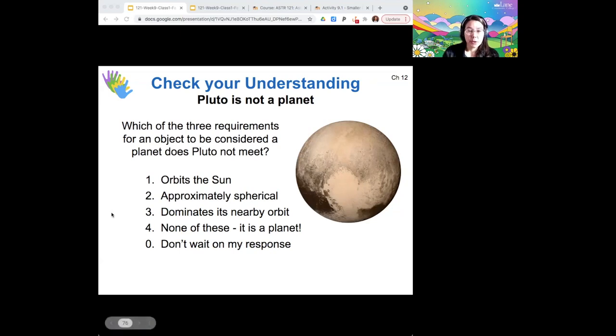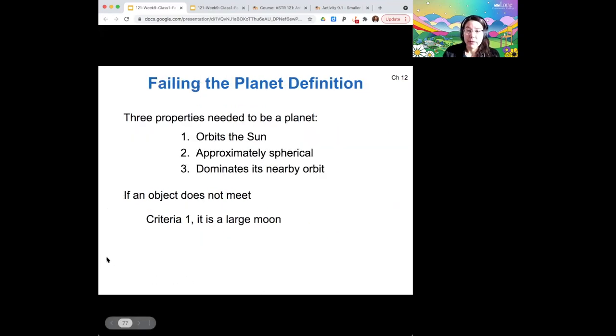All right, yeah, so Pluto doesn't dominate its nearby orbit for the reason that Charon, its moon, is another very large object that is in its nearby orbit. So Pluto doesn't count as a planet for this reason. This definition is a little bit loose, but it is what the astronomy community now uses to classify things.